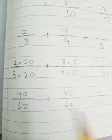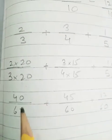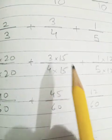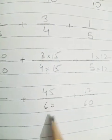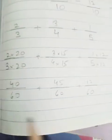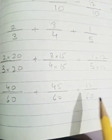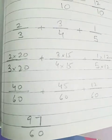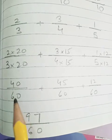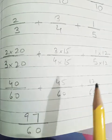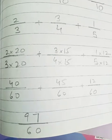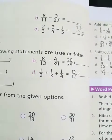Now solve it. So 2 times 20 is 40, 3 times 20 is 60 plus 3 times 15 is 45 and 4 times 15 is 60 plus 1 times 12 is 12 and 5 times 12 is 60. Now the denominator is same. Just add the numerators. So we got 97 upon 60. 40 upon 60 plus 45 upon 60 plus 12 upon 60 equals 97 upon 60. Write this.